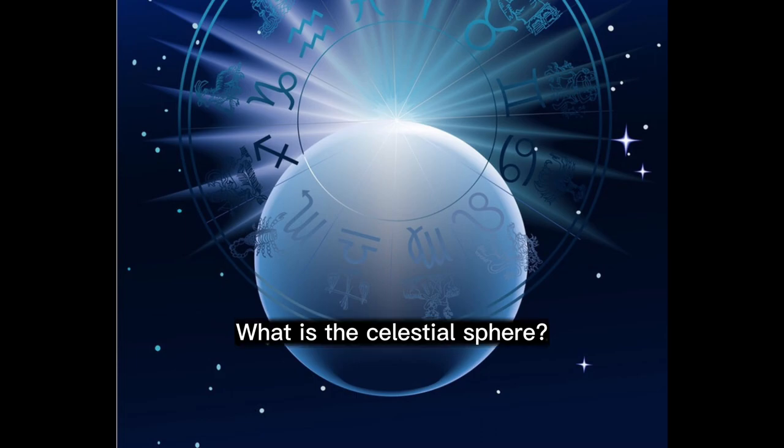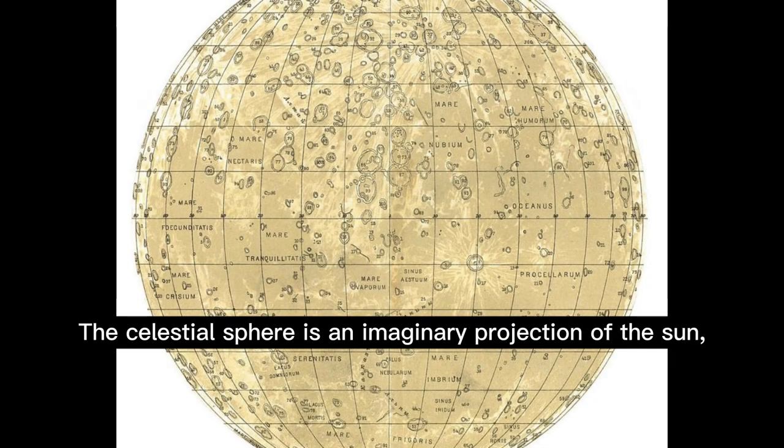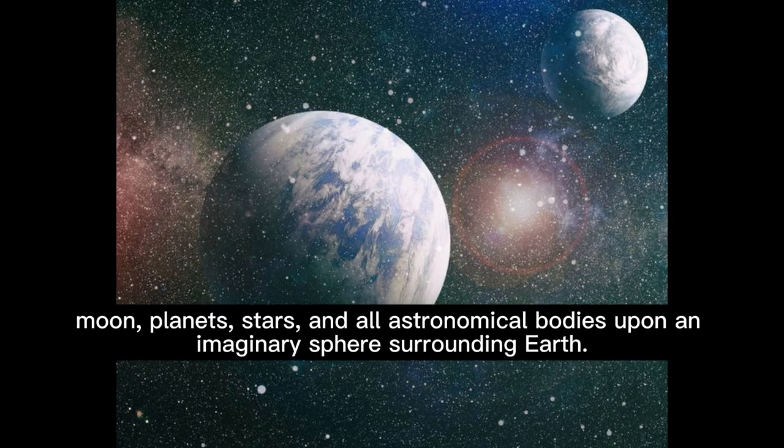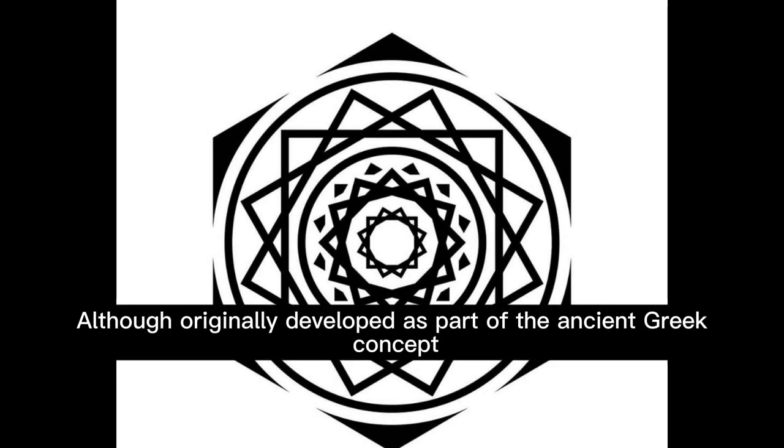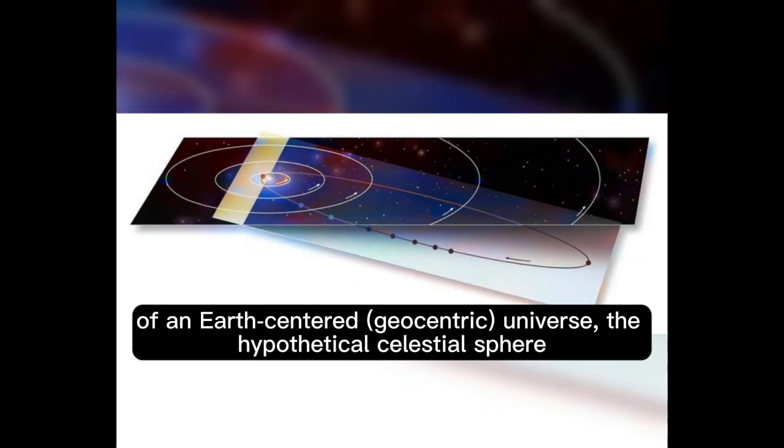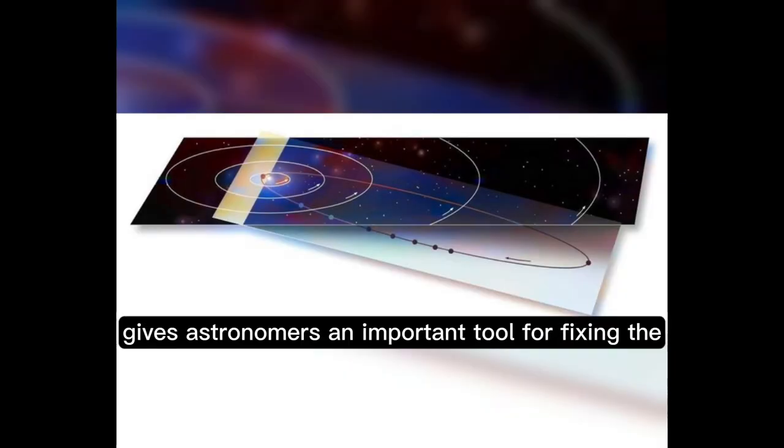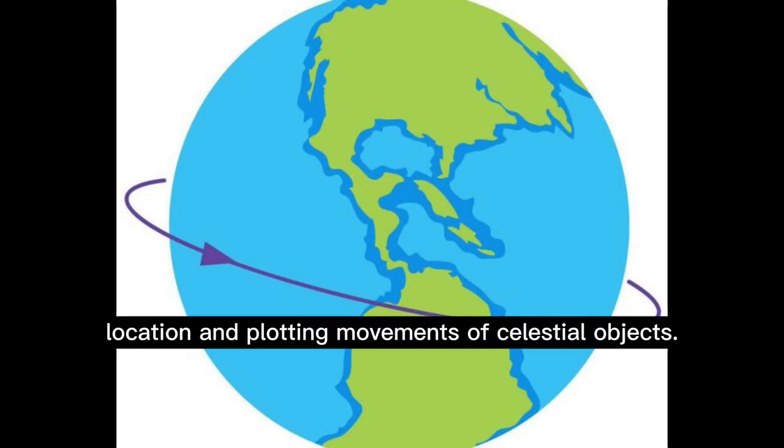What is the celestial sphere? The celestial sphere is an imaginary projection of the sun, moon, planets, stars, and all astronomical bodies upon an imaginary sphere surrounding earth. Although originally developed as part of the ancient Greek concept of an earth-centered geocentric universe, the hypothetical celestial sphere gives astronomers an important tool for fixing the location and plotting movements of celestial objects.